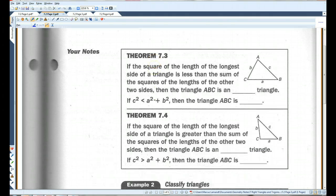Okay, now, if the hypotenuse is smaller than the sum of the squares of the two sides, you have an acute triangle. If the hypotenuse, or the longest side, is bigger than the sum of the squares of the two sides, then it's an obtuse triangle.